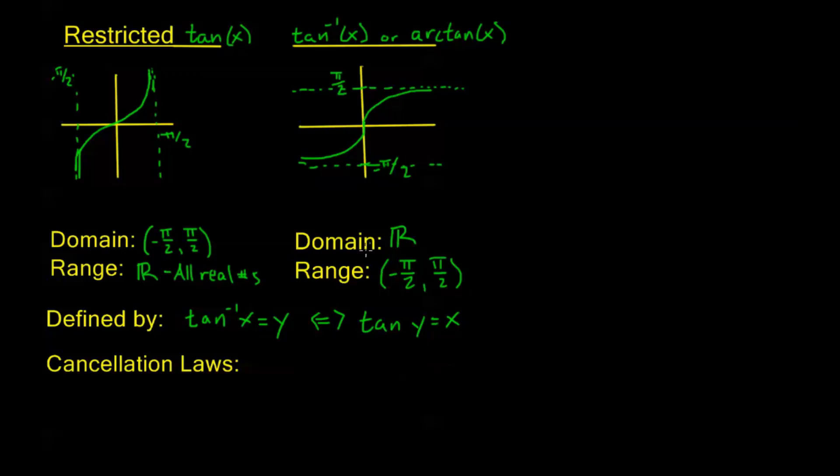We have these cancellation laws. The first cancellation law: tangent of tangent inverse of x equals x. In the past, we had a restriction here—this was only true when sine inverse and cosine inverse were defined. But tangent inverse is defined everywhere. So this is for all x. I'm going to use some notation—this means for all x in the set of real numbers. This is a math sentence. This means for all x in real numbers, or for all real numbers x.